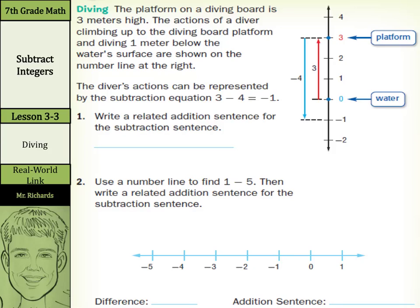Write a related addition sentence for the subtraction sentence. Well, he went up three, so we can write that as a three. And if we want to add something to that, three plus negative four equals negative one.